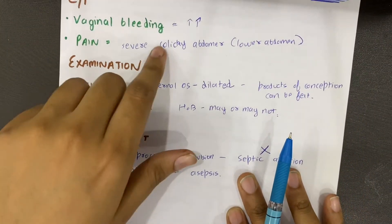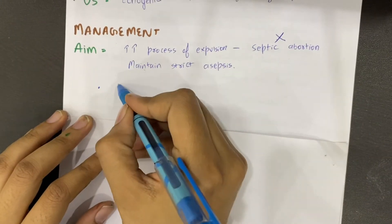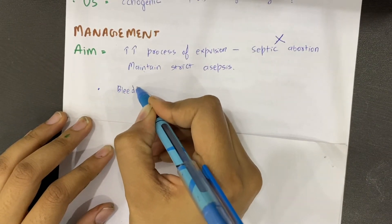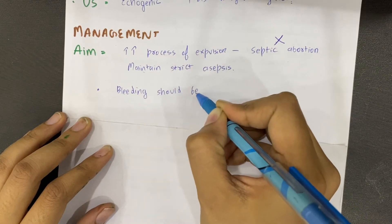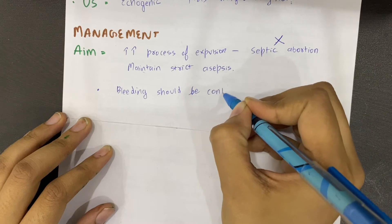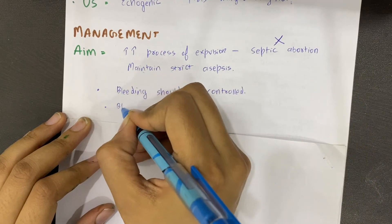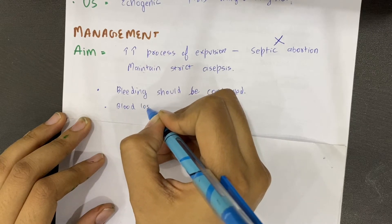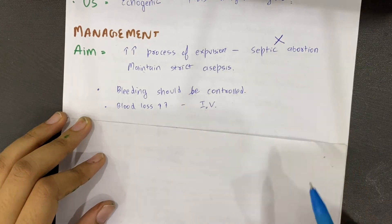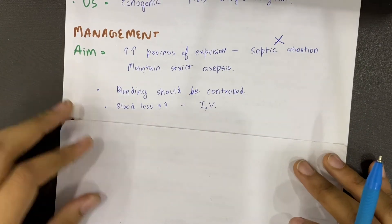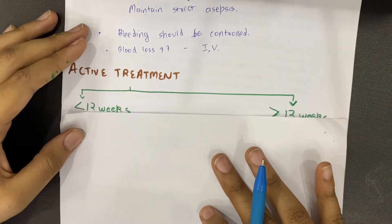We have to check that if excessive bleeding is happening, it should be controlled, otherwise the patient may shift to anemia. If blood loss is more, the patient may need intravenous fluid therapy or blood transfusion.